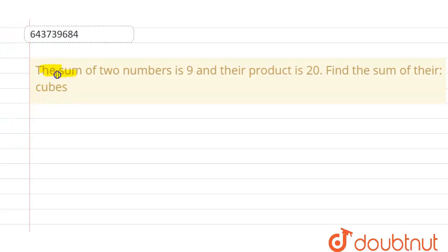We have the question in which the sum of two numbers is 9 and the product is 20, then find the sum of their cubes.